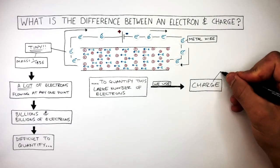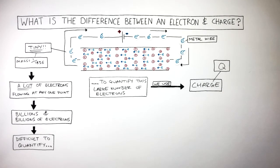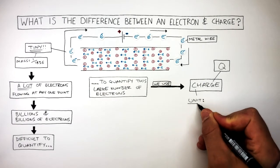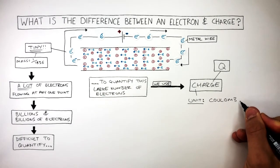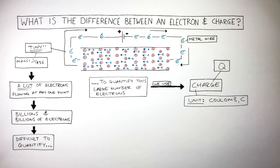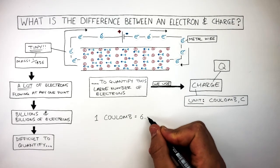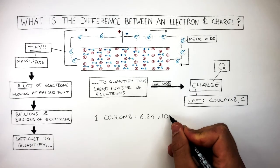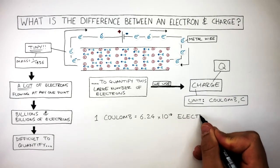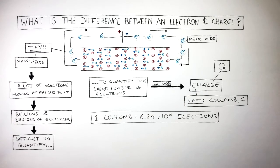The symbol of charge is a capital Q. The unit of charge is coulomb and the symbol of a coulomb is a capital C. So 1 coulomb is equal to 6.24 times 10 to the power of 18 electrons. That is a very large number.